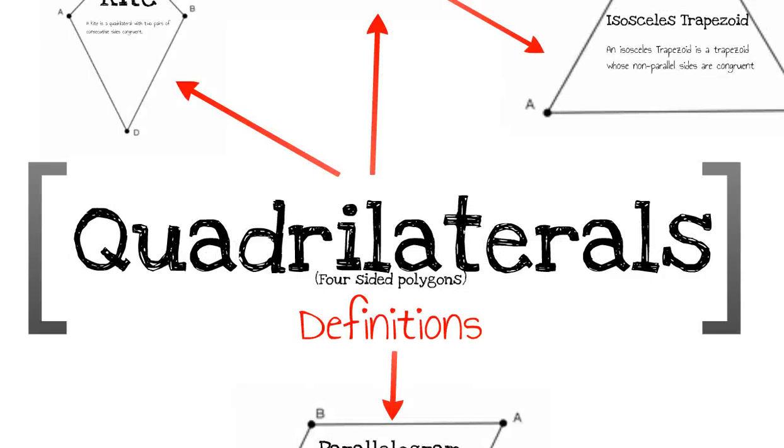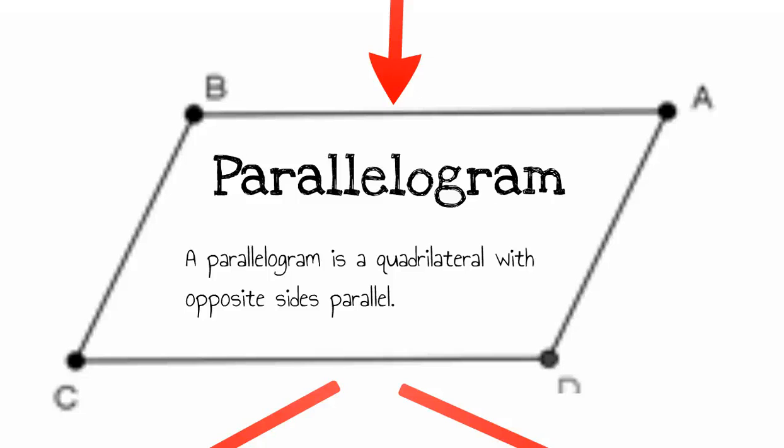Okay, now our last type of quadrilateral is the most common and the one that we'll study the most in geometry, and that's what's referred to as a parallelogram. A parallelogram is a quadrilateral, again, four sides, with opposite sides parallel.